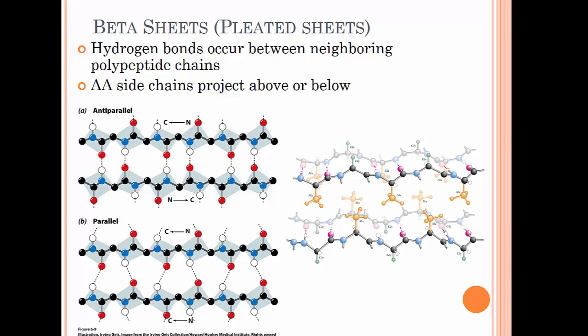A common pattern that we see in pleated sheets is an alternating hydrophilic-hydrophobic R group pattern which results in a two-faced pleated sheet as seen here, where the hydrophobic faces of two pleated sheets can come together to shield them from water and the hydrophilic face is happily exposed.